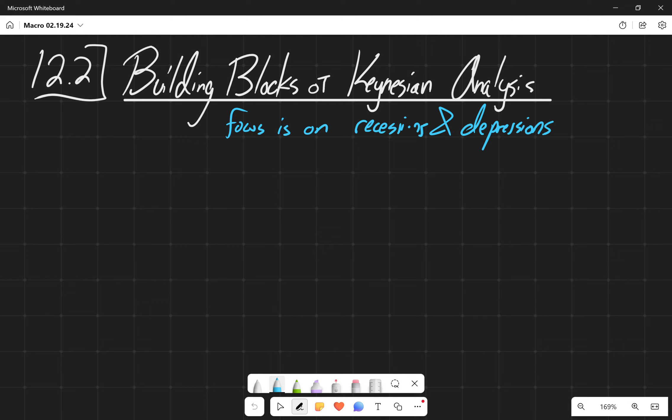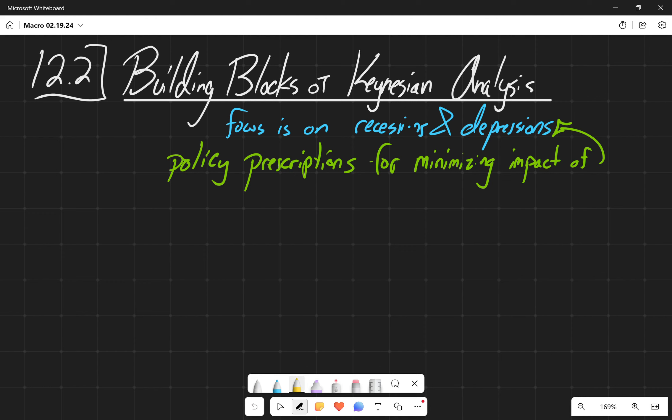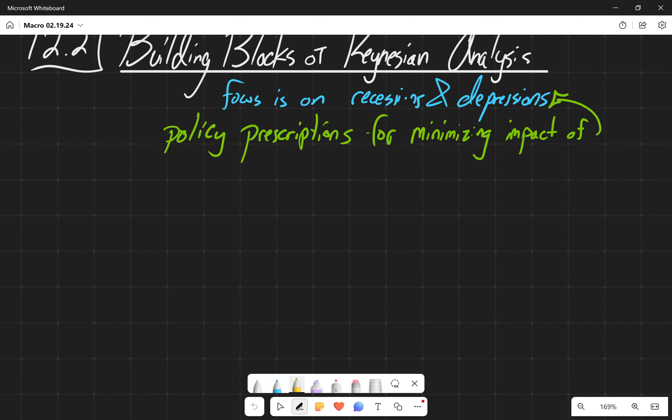And so, part of what Keynes focused on is policy prescriptions for minimizing the impact of the above. Keynes viewed recessions as based on two key building blocks, two key reasons that recessions exist and persist.